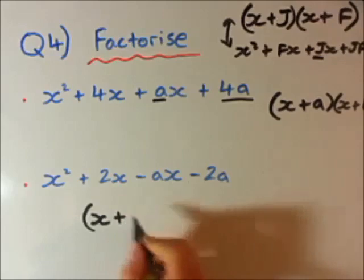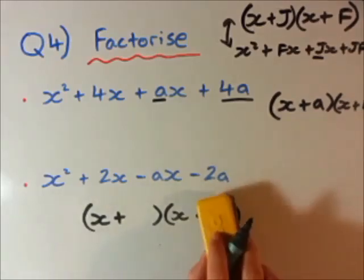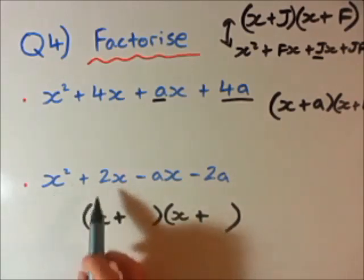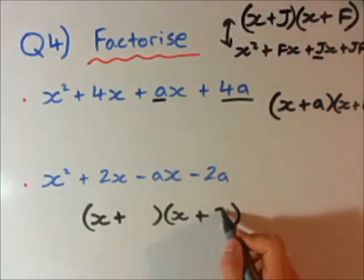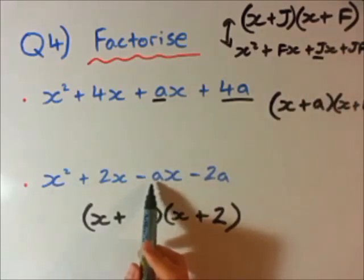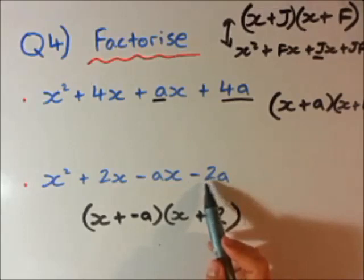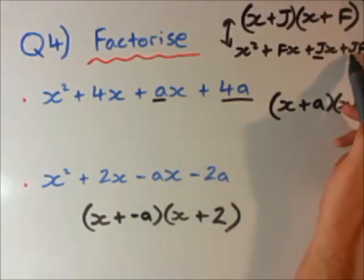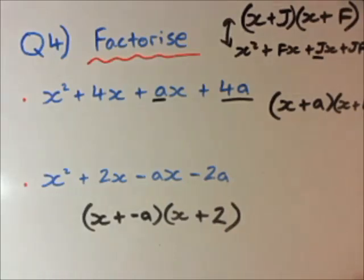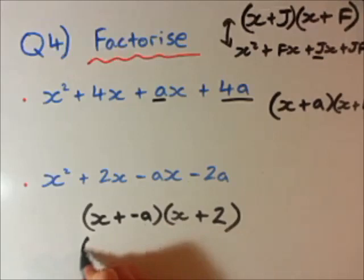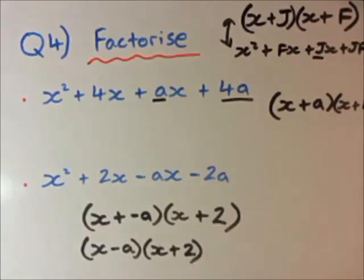We know it's going to be in the form of x plus something, x plus something. Well, we actually don't know of these signs yet. No, we'll leave them as pluses for now. So, let's have a look at this here. We're looking at fx now. We have 2x here instead. So, we can say that f is 2. Let's look at the next one here, jx. We have minus ax. So, we can say that j is minus a. And the last one here, just to see if we're right. We have minus 2a. And we need it to be jf. We know that j is minus a. And f is 2. So, 2 times minus a will be minus 2a. So, we're right. Now, this isn't quite finished. Because if you have x plus minus a, you should actually just write that as x minus a. And then this is x plus 2.